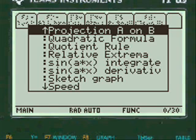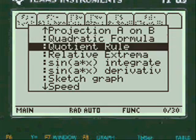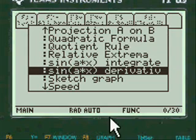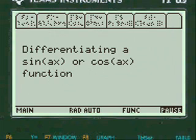What we're going to do is the derivative of sine of 2x here. So we go down to sine of A of x derivative and press enter.